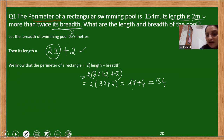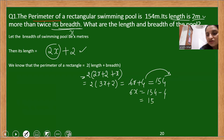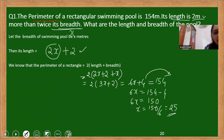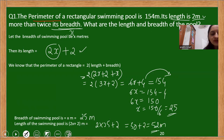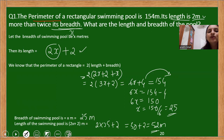Let us solve this equation using the transposition rule. We bring 4 to the other side. After simplification, we get x equals 150 divided by 6, that is 25. Since x was kept as the breadth of the rectangular swimming pool, the breadth is 25 meters. The length will be 2 into 25 plus 2, which is 50 plus 2, that is 52 meters. So the length of the swimming pool is 52 meters and the breadth is 25 meters. Read the word problem carefully, identify what to find, keep it as x, and build the relationship.